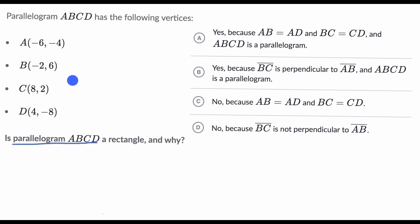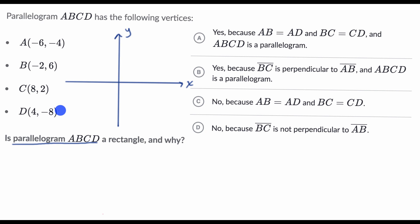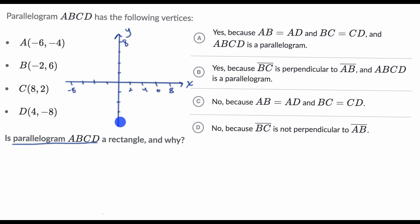To help us visualize, let me put some coordinates and draw some axes. That's my x-axis and this is my y-axis. I'll count by twos: two, four, six, and eight on the positive side, and negative two, negative four, negative six, negative eight on the negative side — both horizontally and vertically. So each hash mark is another two.